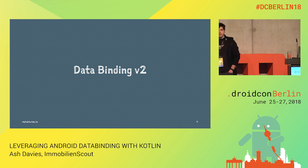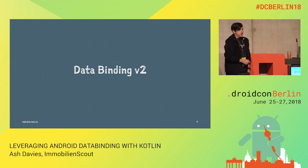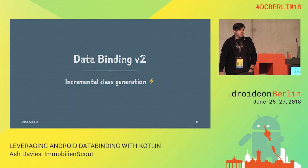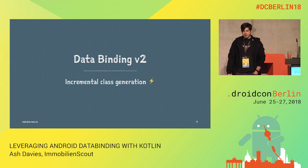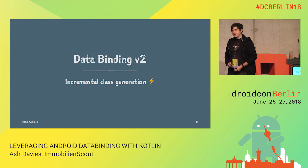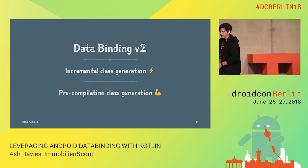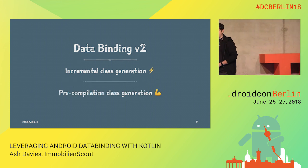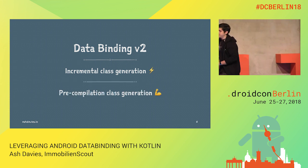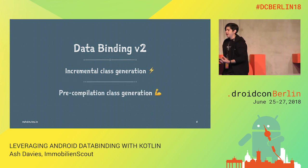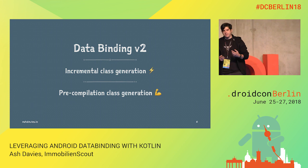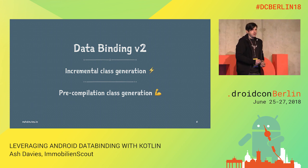As of Android Gradle Plugin 3.1, it includes the new data binding compiler — data binding version 2. This includes incremental class generation, which will speed up your build times a little bit. And it will have pre-compilation of classes, which means your data binding classes will actually be available prior to your first build.